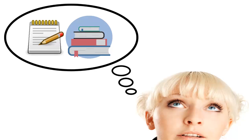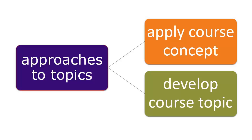The best way to start is to look through your course notes and readings. Pick a few things you thought were interesting and would like to know more about. Topics often involve one of two approaches. You can pick a topic from class that you want to look at in more detail, like employment discrimination. Or, you can take a concept you learned about in class and apply it to something else. For example, if you learned about pay equity for women, you could look at it for recent immigrants.